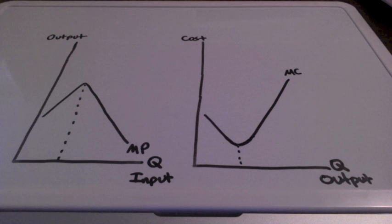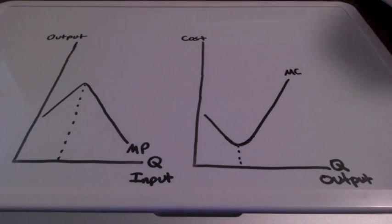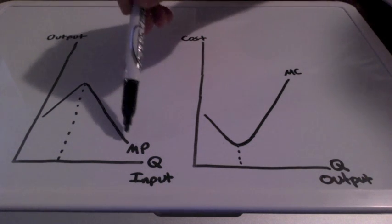When marginal cost goes down and then up, it is because of the law of diminishing marginal returns.